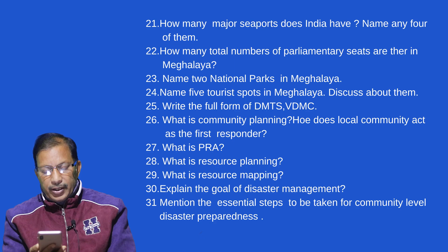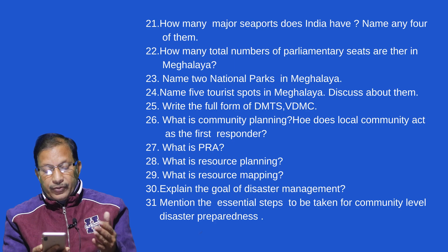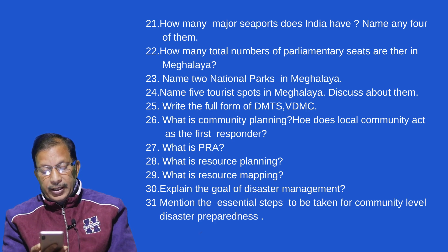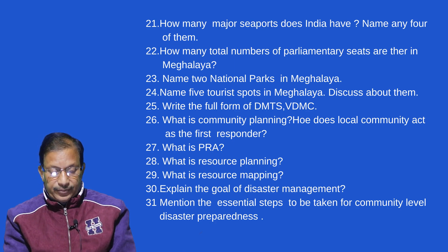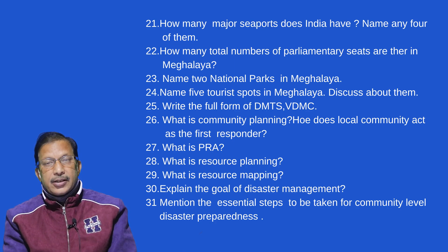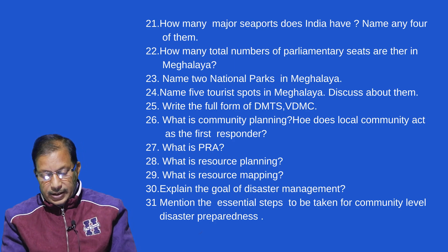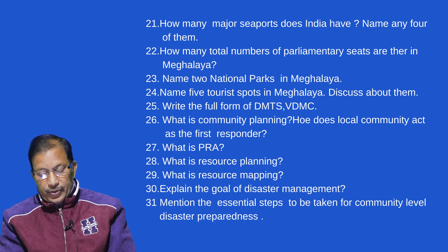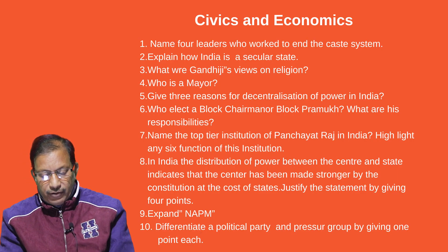What is the full form of DMTS and BDMC? What is community planning? How does the local community act as the first responder? What is PRA — write the full form and define it. What is resource planning? What is resource mapping? Explain the goals of disaster management. Mention the essential steps taken for community-level disaster preparedness.